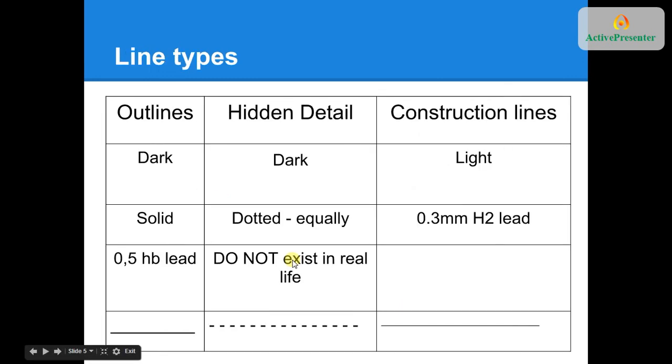Once you've got the equipment, you need to focus on the different types of lines you'll be drawing. Lines are like the language you speak. When you're talking in a language, you need to know the language of lines. Three different types here. The first one, outlines. These are dark, solid lines. They are the final lines we'll be putting down on our drawing.